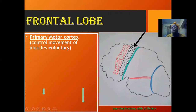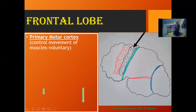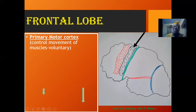Any voluntary control of muscles that we exhibit is being controlled in the primary motor cortex, located anterior to the central sulcus. This can also be referred to as the precentral gyrus — after the central sulcus depression, there is an elevation, a gyrus situated before the central sulcus. So the primary motor cortex can also be referred to as the precentral gyrus, located just immediately anterior to the central sulcus.